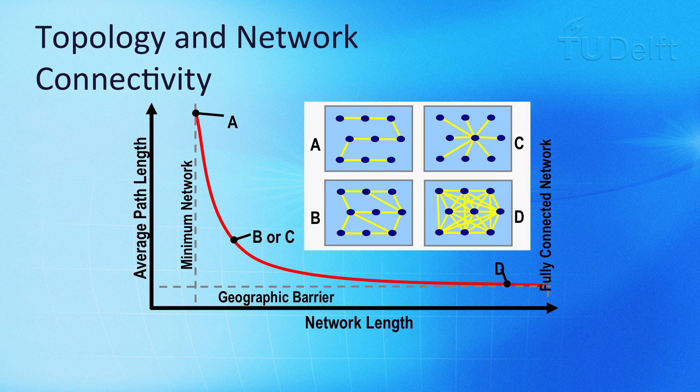With graph D, we have the opposite situation, where all the nodes can be quickly reached from all the other nodes. But the network is very expensive in terms of the number of edges that need to be built.